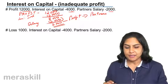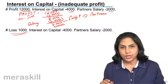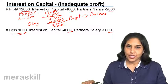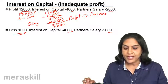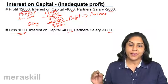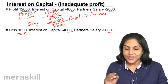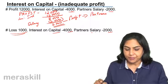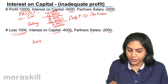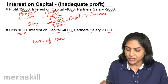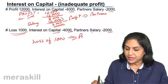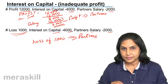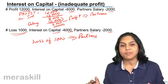Let us take another example: there is a loss of 1,000. Interest on capital is 4,000, partner salary is 2,000. In the absence of agreement, interest on capital and partner salary can be paid only out of profits. So in this case, no interest on capital will be paid and no partner salary will be paid. The loss of 1,000 will be given to the partners, distributed in whatever is the profit sharing ratio.